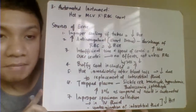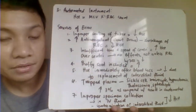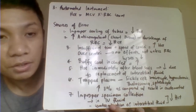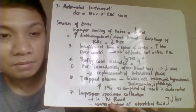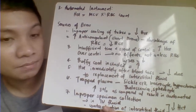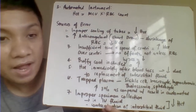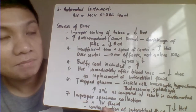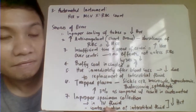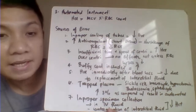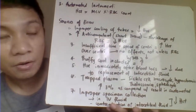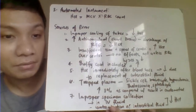Another method is the automated instrument, which measures hematocrit by derivation: it multiplies the MCV (mean corpuscular volume) by the RBC count to compute the hematocrit value.